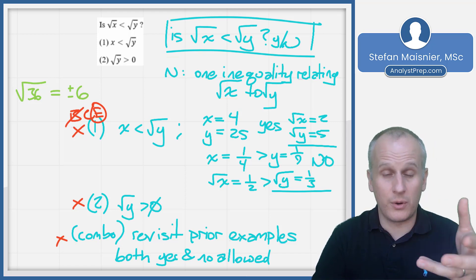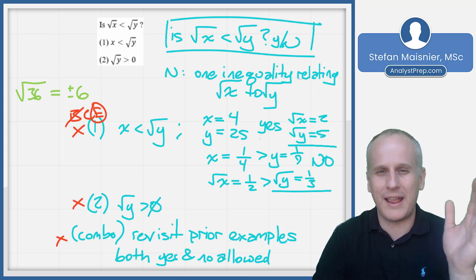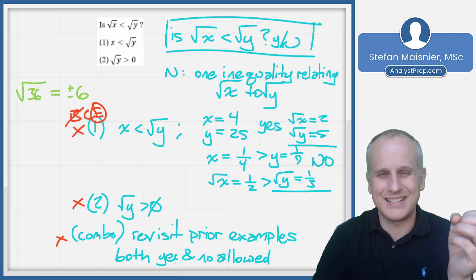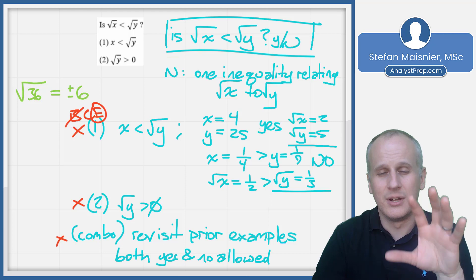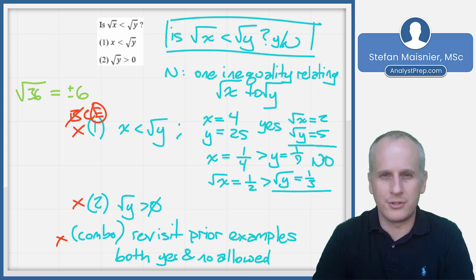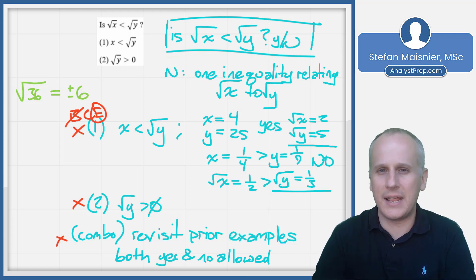When dealing with square root values and squaring in data sufficiencies, be very careful about the implications of negatives. Test different options, thinking about when square roots get bigger or smaller — remember that squaring a fraction gives a smaller value (one-half squared is one-fourth), while squaring a value greater than one gives a larger value. Consider the implications of positives and negatives, especially in data sufficiencies, to avoid trap answers on difficult exponential and radical questions in the harder half of the Executive Assessment quantitative section. Practice these concepts to get ready for your official test.